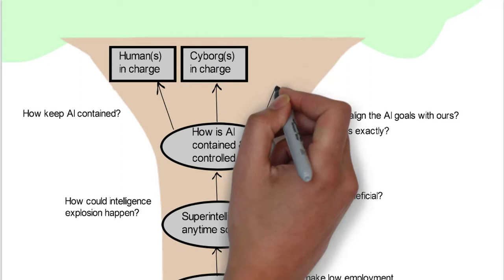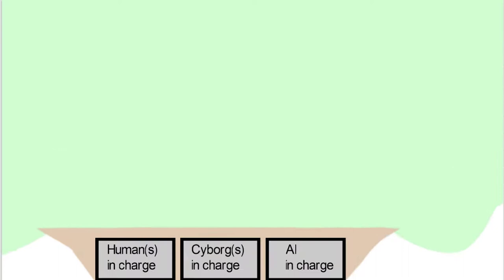Then he looked at three options. One is that the humans will be in charge. The other is that the cyborgs will be in charge. And the last one is that the AI itself will be in charge.